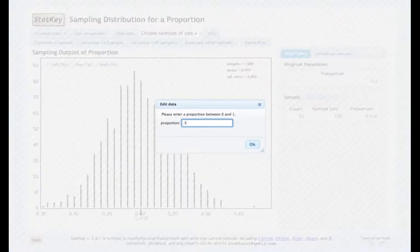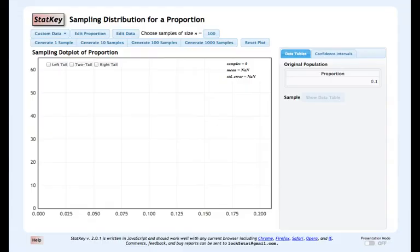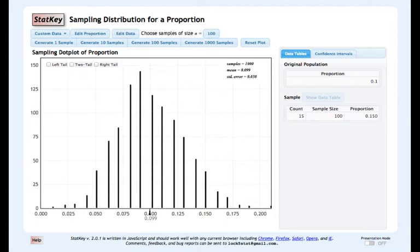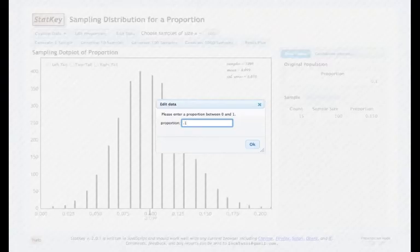When I edit that proportion and change it to 0.1, it still looks like a pretty nice bell-shaped distribution. I'll generate a few more samples. It does kind of correct for that little bit of skew that we were seeing.